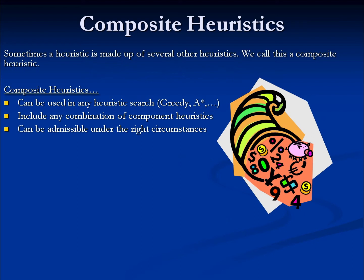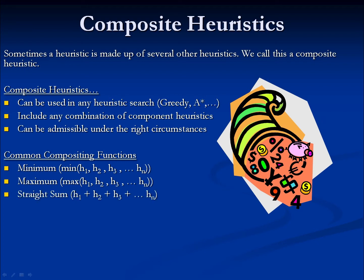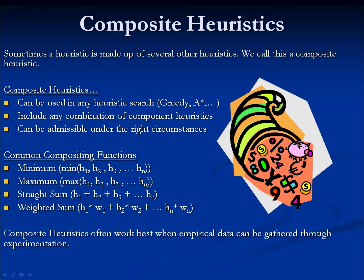There are a lot of different cases where we might want multiple heuristics, and a lot of different ways we can combine them. A minimum function would evaluate all given heuristics and use whichever one has the lowest value. We could also do a maximum — evaluate all of them and use whichever has the maximum value. We can also just sum them together, adding up all the heuristic results. Or we could do a weighted sum, which is adding all the results together after multiplying them by a given weight. This allows one heuristic to be more important than another, and is good for a designer who might want to wiggle those values around to get different behaviors.